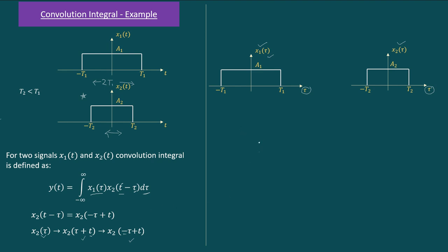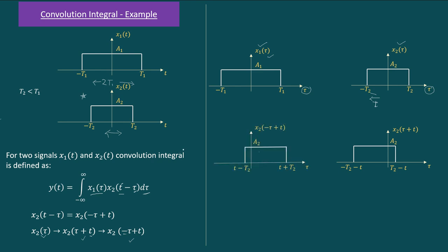Assuming t to be positive, we shift the signal to the left by t units. This gives us x2(τ − t). But since we want x2(−τ + t), we then flip the signal obtained in step 1. After flipping, we get the final signal x2(−τ + t). Note that the sign change happens at this step.